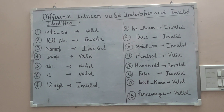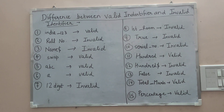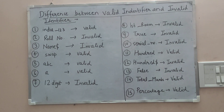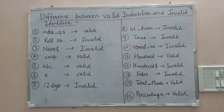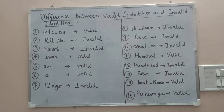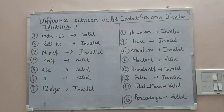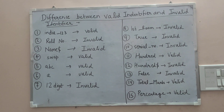The fifth is `abc` — yes, we can use this, so it is valid. The sixth is `a` — there is only a single letter or character used, and that also comes under a valid identifier.